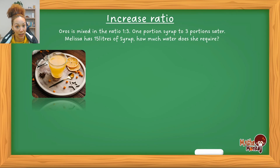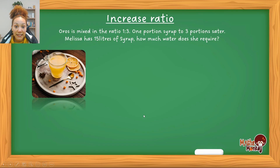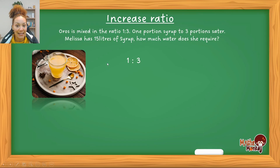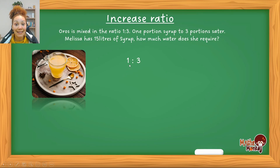The example: Oros is mixed in the ratio 1 : 3, where 1 portion syrup is mixed with 3 portions water. Melissa has 15 litres of syrup — how much water does she require? The easiest method to use here is the LVN method. You start with the ratio 1 : 3, where 1 represents the syrup and 3 represents the water.